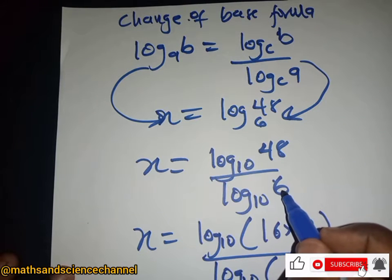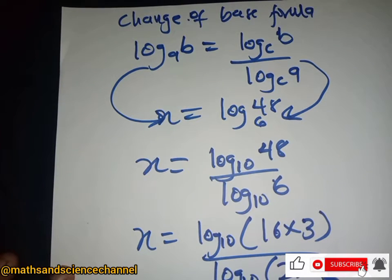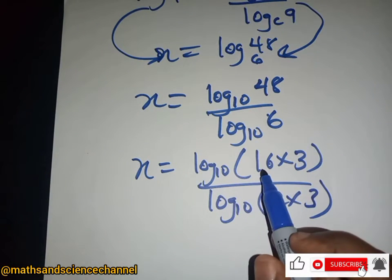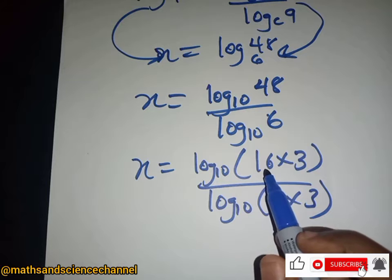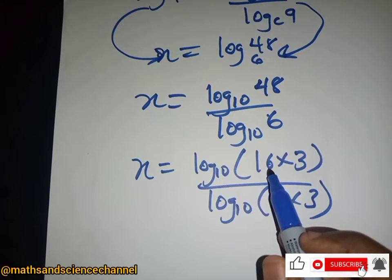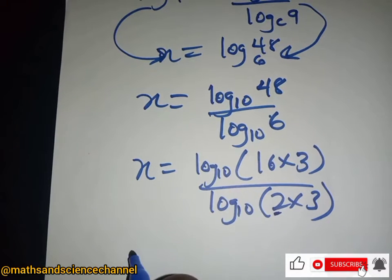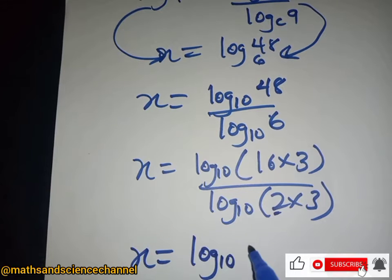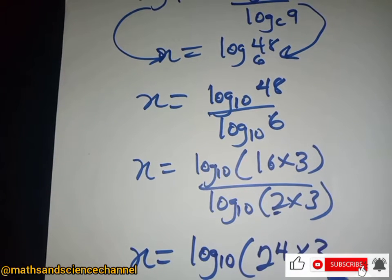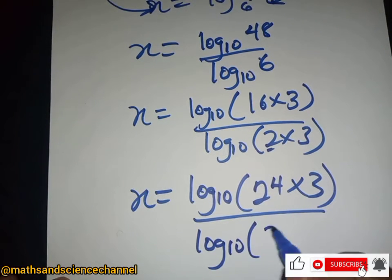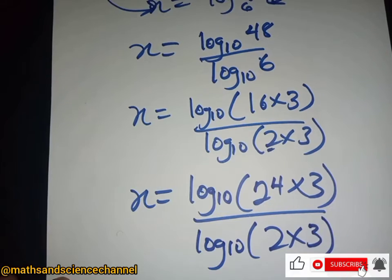Now, 16 can be written as 2 to the power 4. So we can reduce 16 to base 2. So we have log base 10 of (2 to the power 4 multiplied by 3), divided by log base 10 of (2 multiplied by 3).